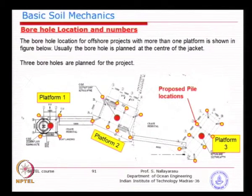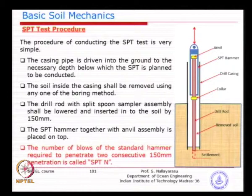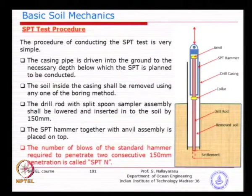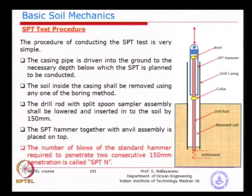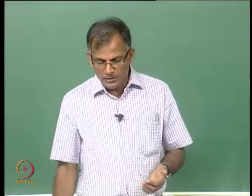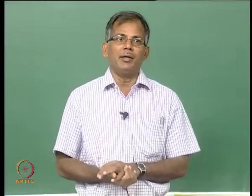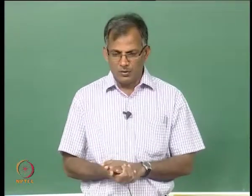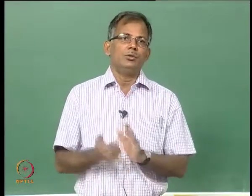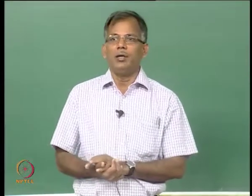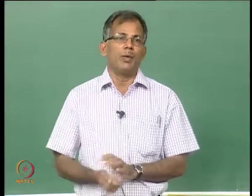I just wanted to show this picture so that you can understand how we plan a borehole location, and the numbers for a typical offshore project are something like this. Irrespective of number of piles, you try to use one borehole. The best practice could be individual or a medium — you can do one at one corner and another one, and you get a profile for each platform which will represent all the piles, so that your risk is reduced.